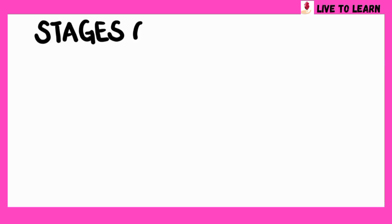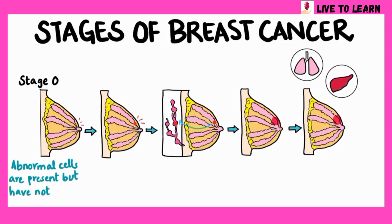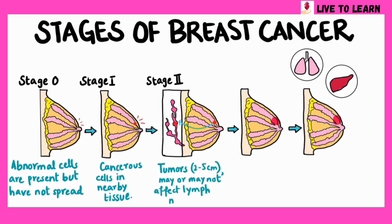The cancer is labeled as stage 0 when abnormal cells are present but have not invaded the nearby tissue. Stage 1 involves cancer cells breaking through or invading normal surrounding breast tissue. In stage 2, the cancerous cells have formed tumors about 2-5 cm in size that may or may not affect the surrounding lymph nodes.